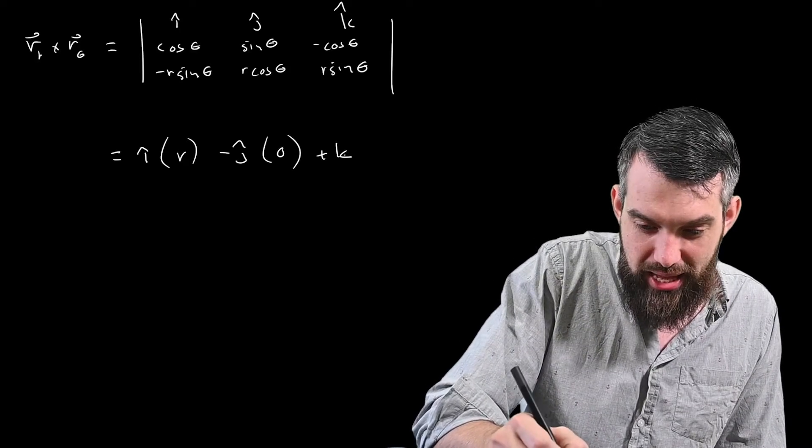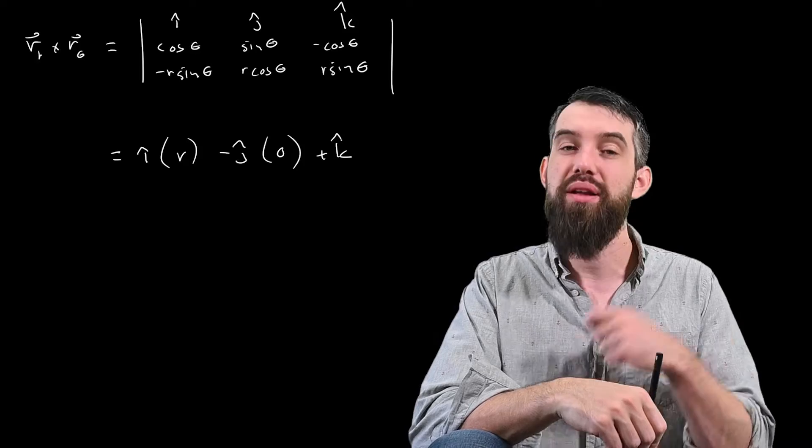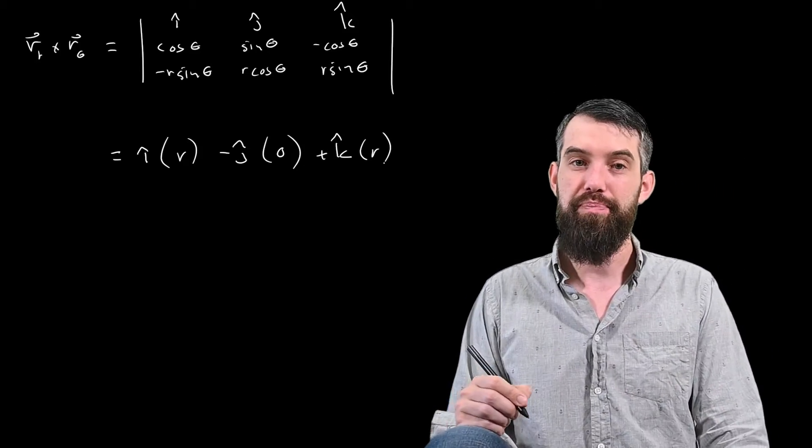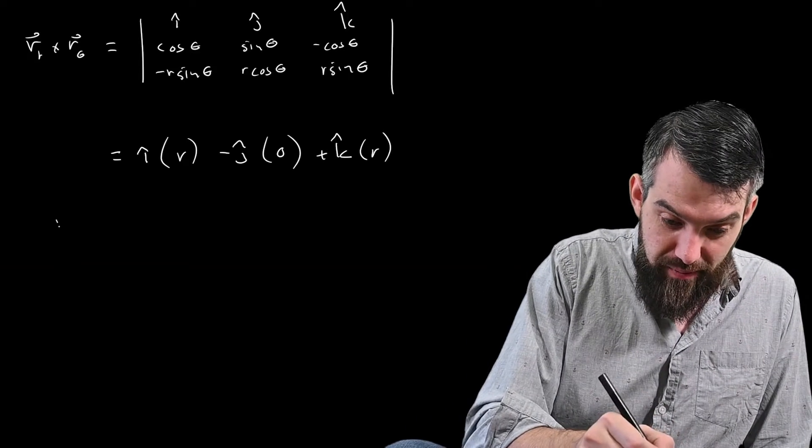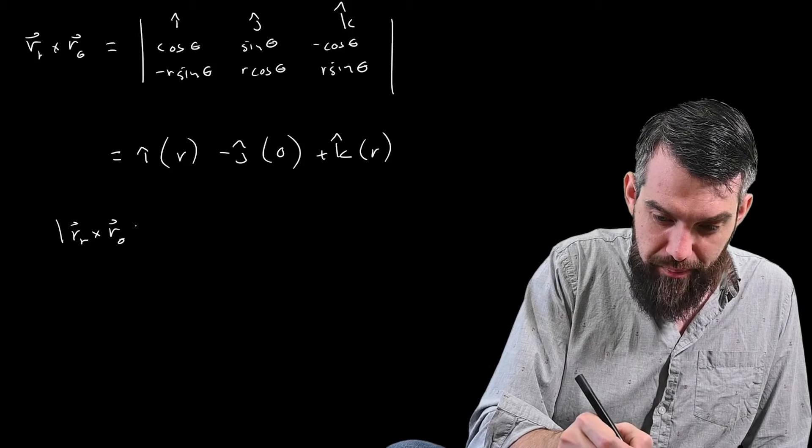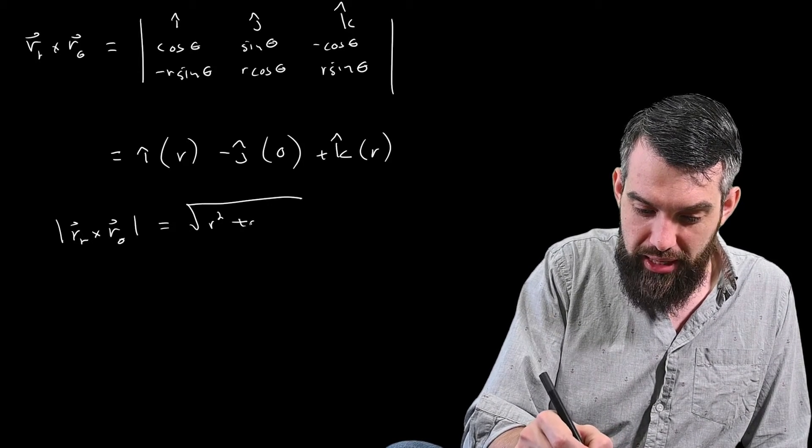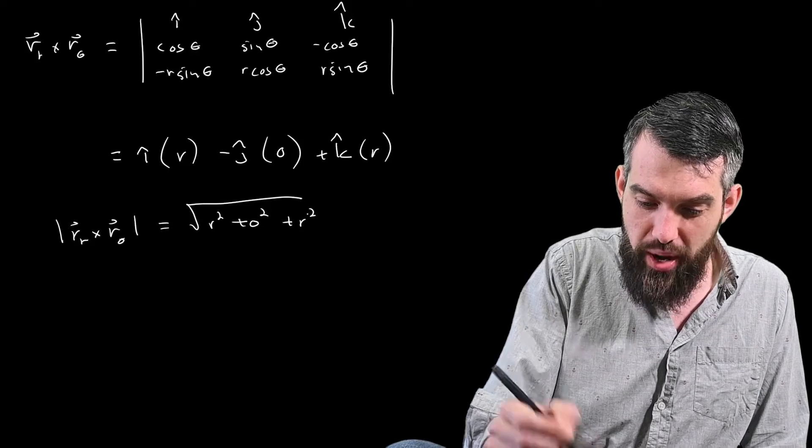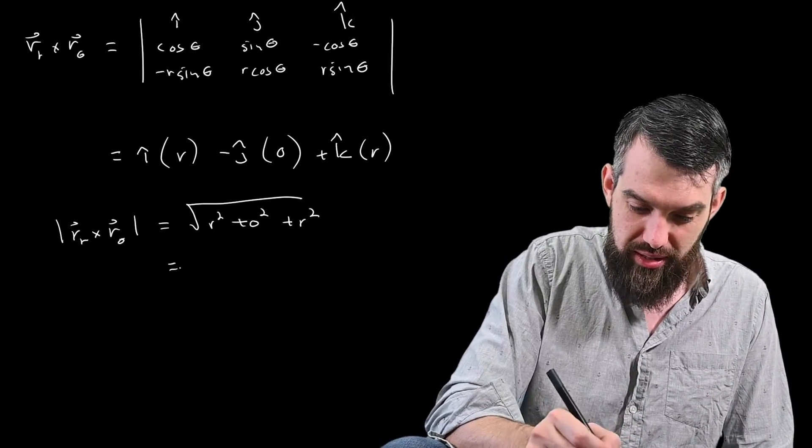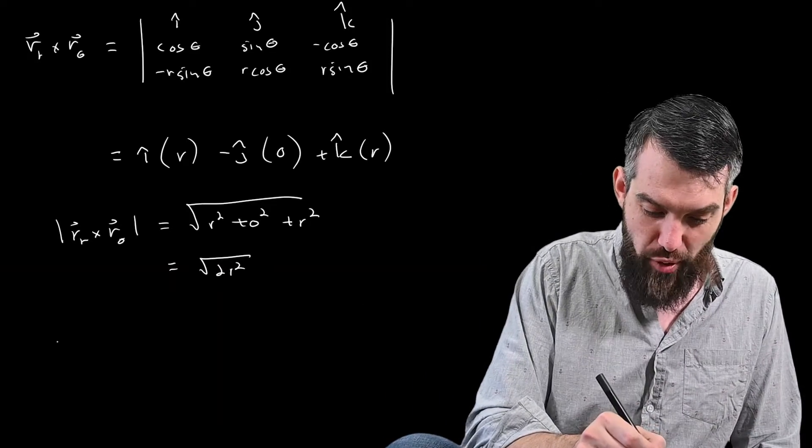And then plus a k hat, and this is going to be, it looks like, r cos squared minus minus plus r sine squared again. So not so bad really. Length of r_r cross r_θ is square root of r squared plus zero squared plus r squared. I'm taking the square of each of these different components, and so this looks like square root of 2r squared. And now I can write down my formula.